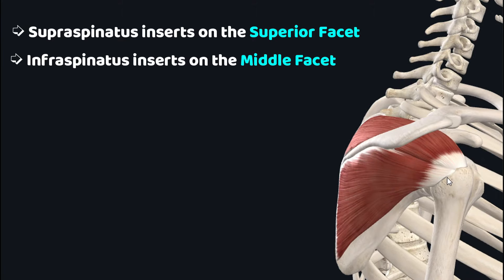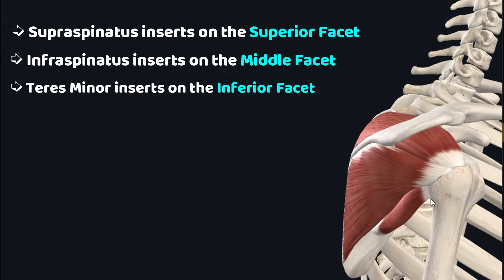The infraspinatus muscle inserts on the middle facet, while the teres minor inserts on the inferior facet of the greater tubercle.